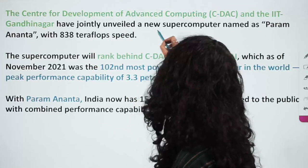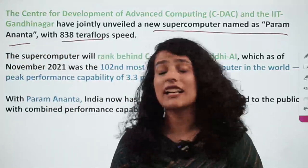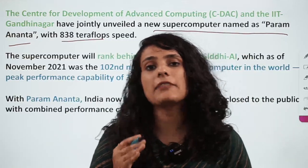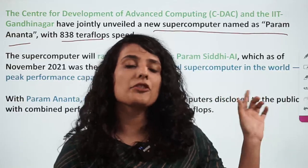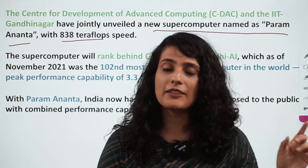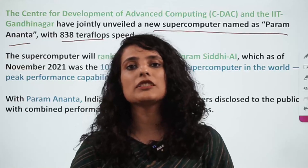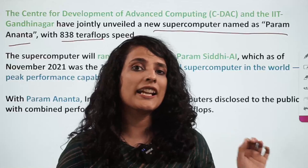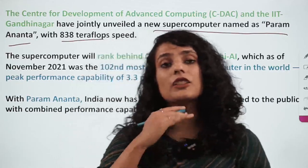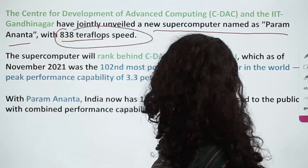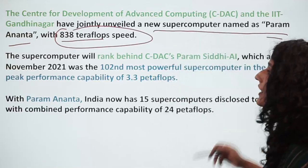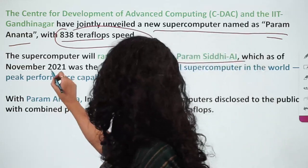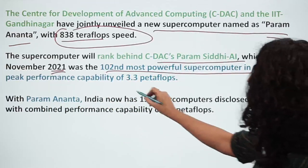The answer is IIT Gandhinagar along with CDAC — they have jointly unveiled the new supercomputer named Param Anant with 838 teraflops. Ab tak hamaari country mein the fastest supercomputer speed was 6.8 petaflops, which was Pratyush and Mihir. Pratyush supercomputer was launched by the Indian Institute of Meteorological and Tropical Studies in Pune. This new Param Anant will rank behind CDAC's Param Siddhi AI, launched in November 2021, which was the 102nd most powerful supercomputer with 3.3 petaflops.